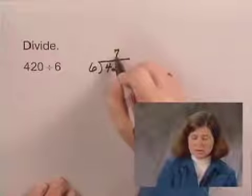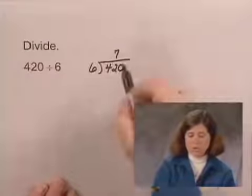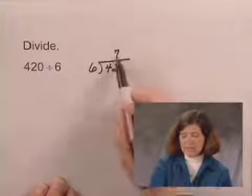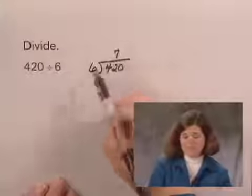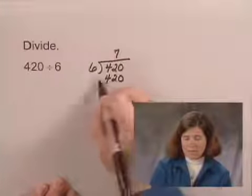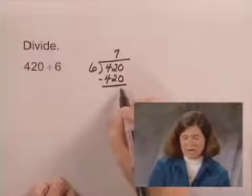So we write a 7 above the 2, and we multiply 7 times 6. Now this is really 7 tens, so we're multiplying 70 times 6. So we write 420, and we subtract, and we have a remainder of 0.